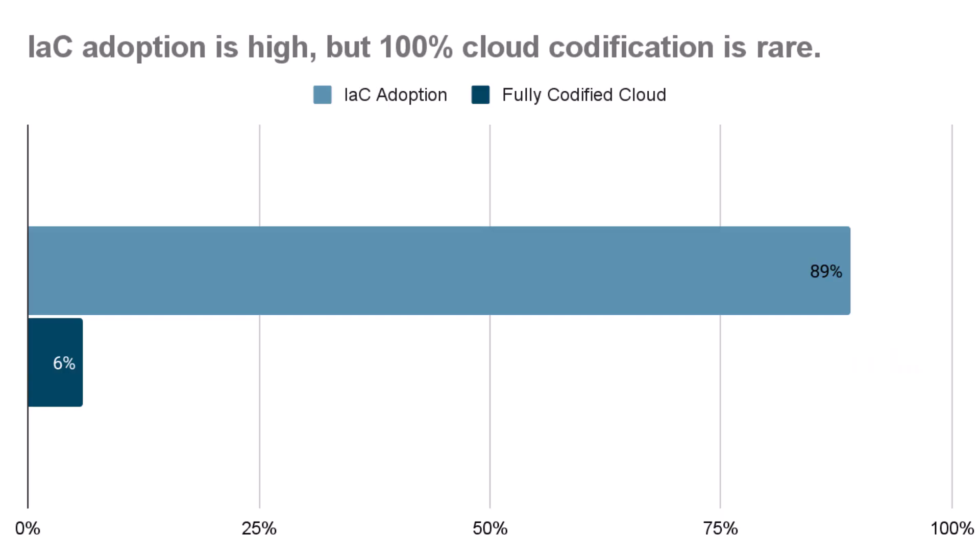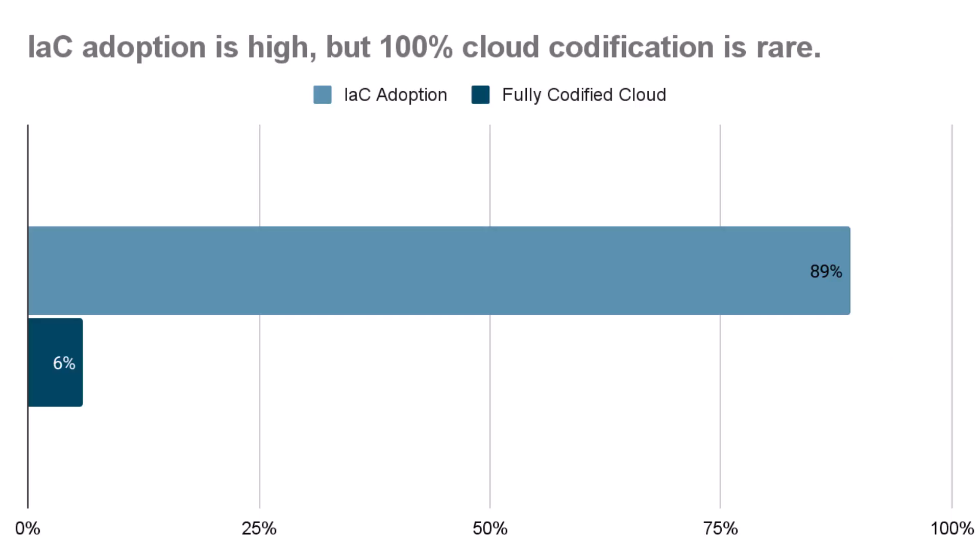There's little doubt at this point that adopting infrastructure as code is critical to your success in a modern operating environment. 89% of organizations are using IAC, a figure that has risen every year they've done this report. But that doesn't mean that folks have universally adopted IAC for all existing environments, as only 6% of respondents had all of their infrastructure codified.